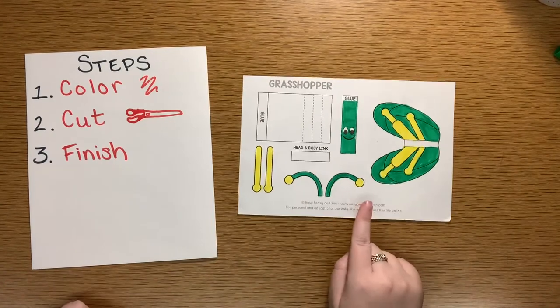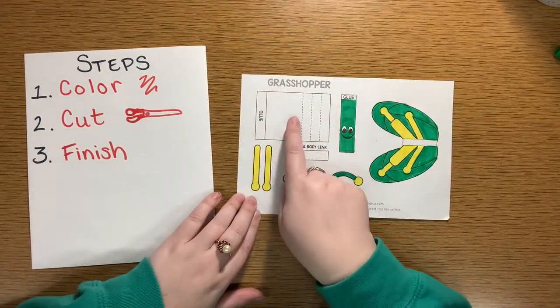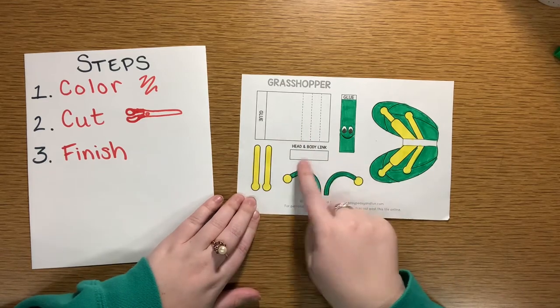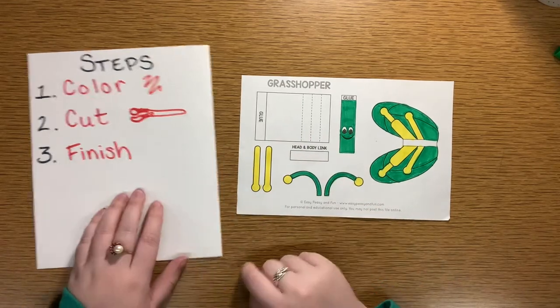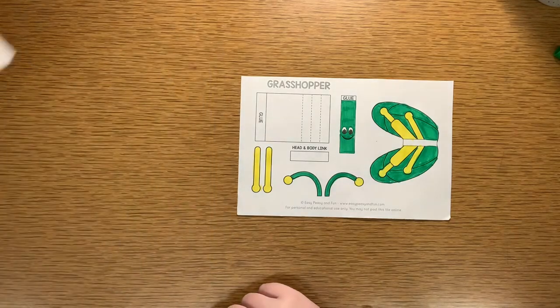I've gone ahead and colored my grasshopper. I've decided to leave this body part blank, but you can color that and the head and body link if you'd like. Since I'm all colored, my next step is to cut out these puppet pieces.